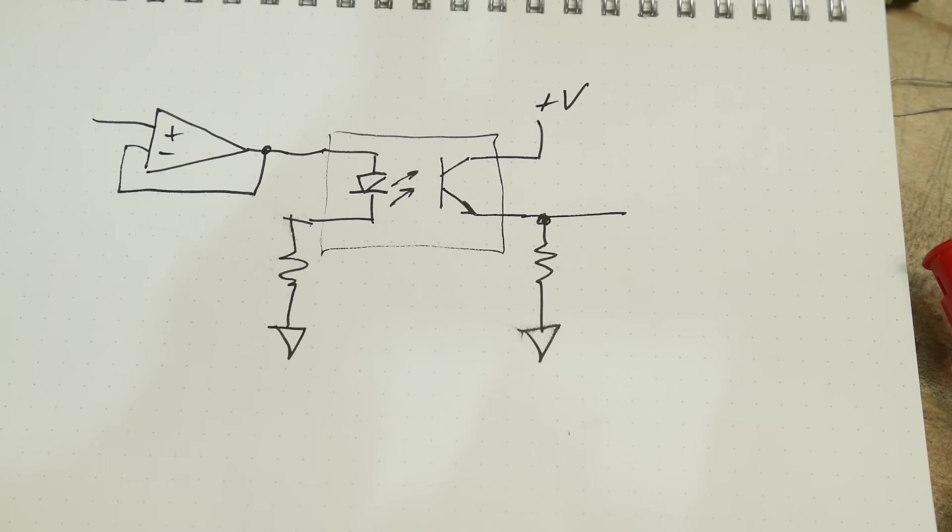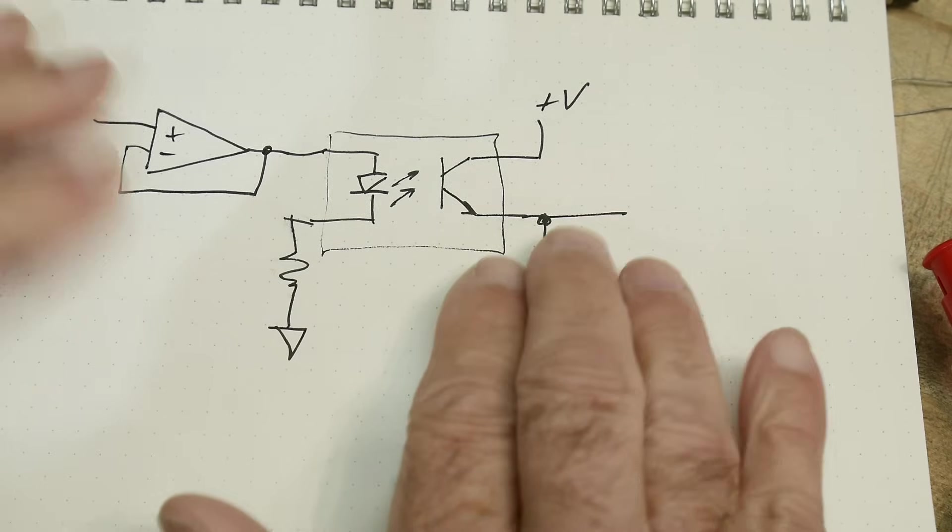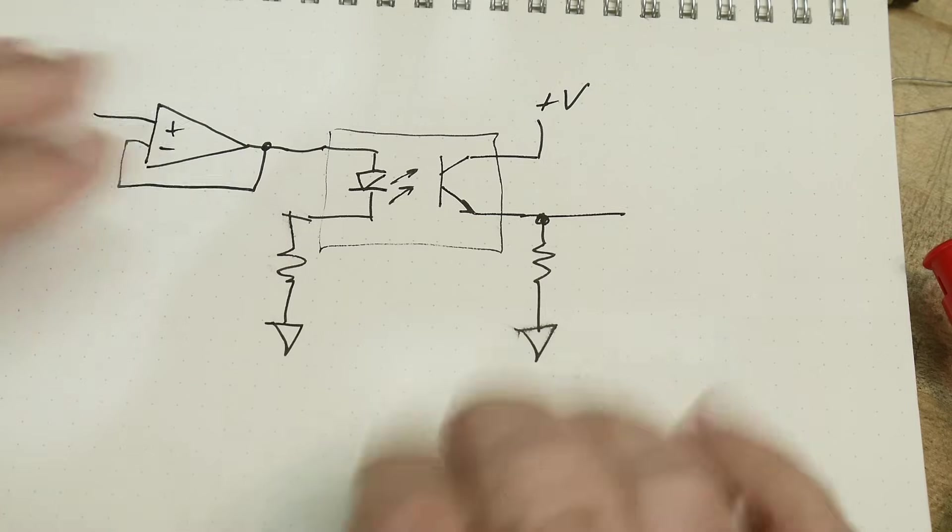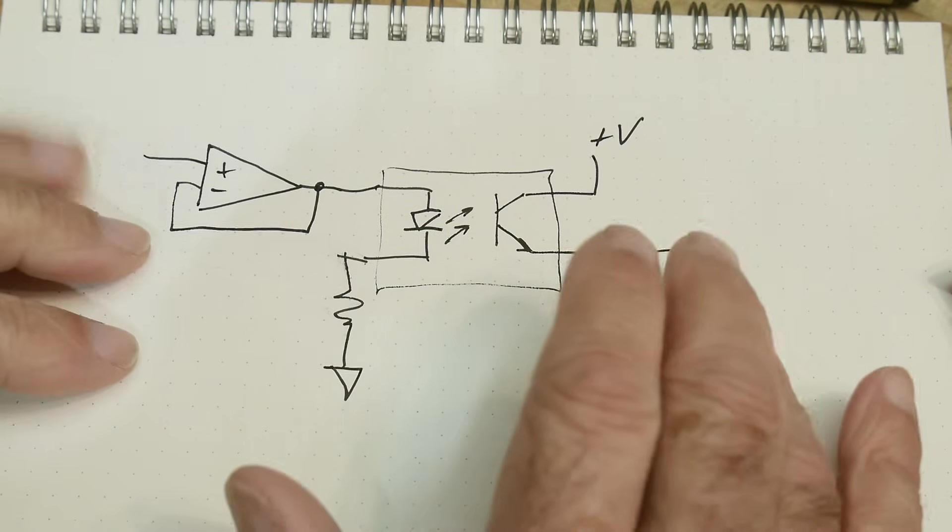I had a viewer request to look at analog-to-analog transmission through an optocoupler, to have isolation for an analog-to-analog signal.